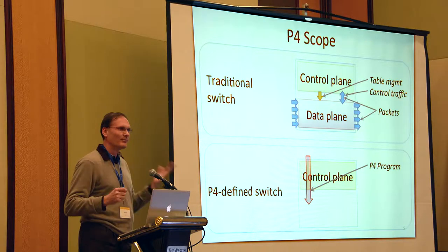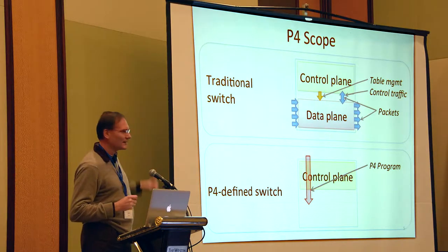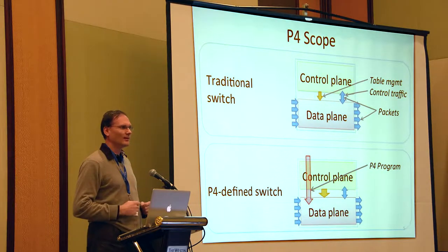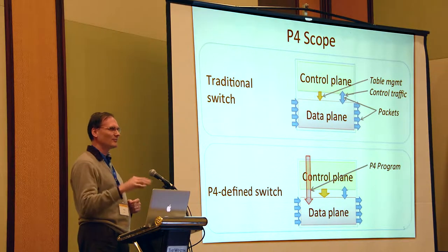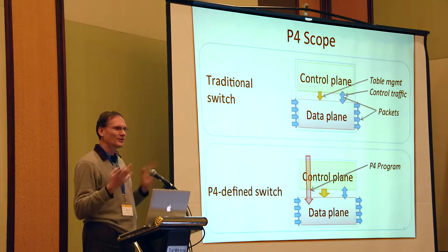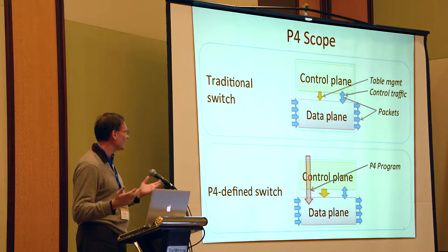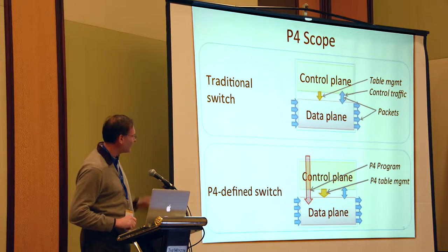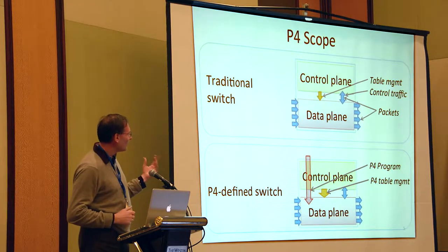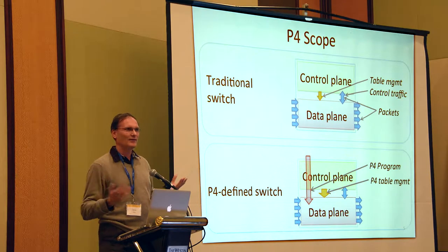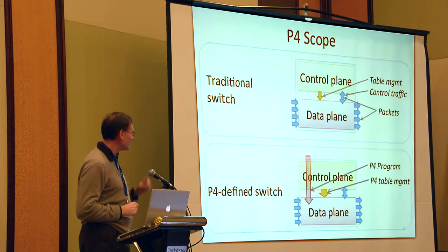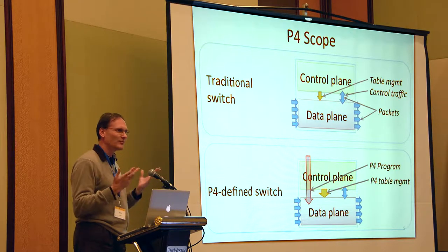The control plane tends to control the data plane behavior using table management. Think of routing tables. By routing entries in the routing table, you tell the data plane what to do. But there's also some control traffic. Whenever the data plane doesn't know what to do, it bumps packets up to the control plane and the other way around. And all these blue arrows are packets in my picture. So the view of the world that we'd like to achieve is the one at the bottom, in which you have a control plane. This hasn't changed. I'm not going to help you with that too much. But you don't have a data plane. There's no data plane. Your switch is empty. It's a blank piece of paper.